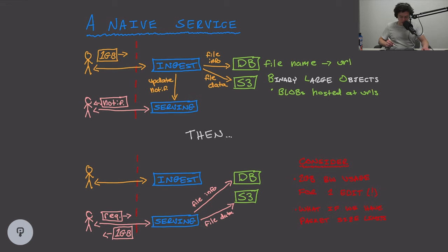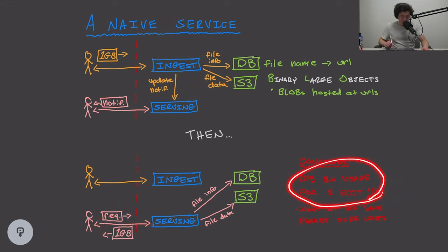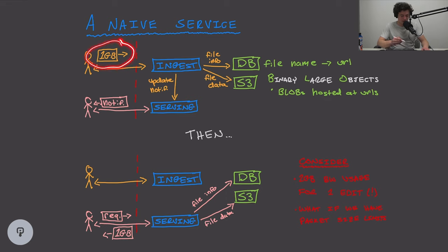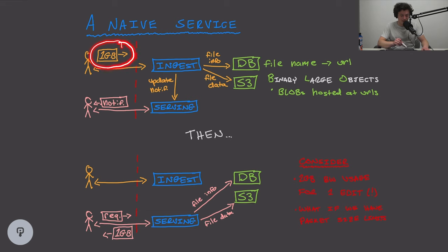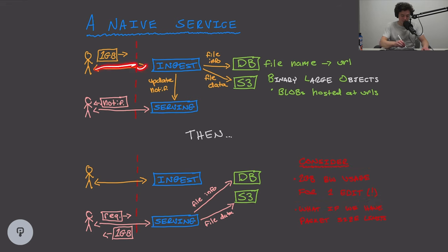Let's consider the problems. First, bandwidth: uploading a file uses one gigabyte of bandwidth, and downloading uses another gigabyte — two gigabytes total for one edit. With 1 million daily active users, that's 2 million gigabytes of bandwidth per day, which is not scalable. This also isn't fault tolerant — the public internet is unreliable. If the packet gets cut off mid-transfer, we have to resend the entire gigabyte file, using even more bandwidth overall.